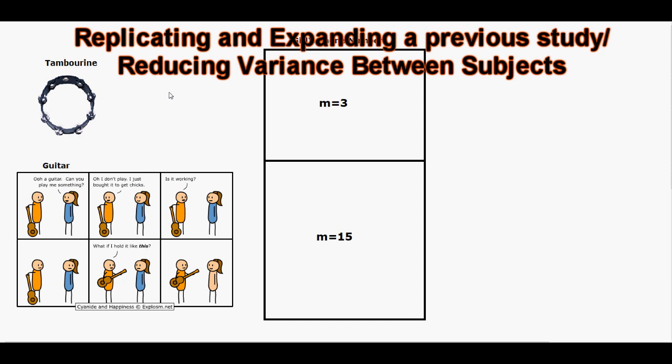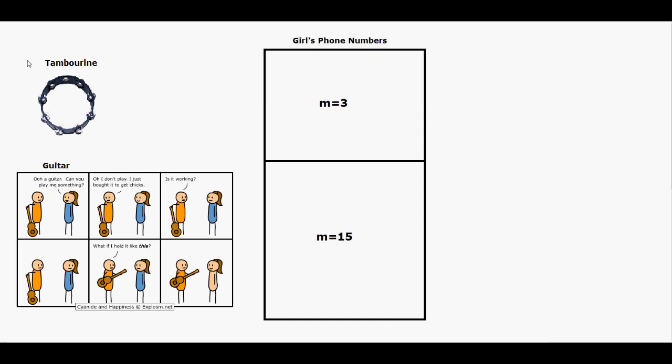So what we're looking at is research that I just made up. But basically what we're looking at is a relationship between the instrument a person plays and the amount of numbers from girls that person will get. Now our first treatment happens to contain people playing a tambourine and the second treatment happens to be guitar. Our mean for tambourine and getting phone numbers is an average of three girls per subject, and for guitar it happens to be 15 surprisingly.